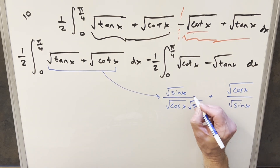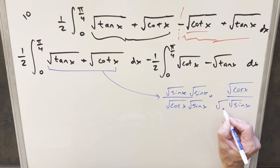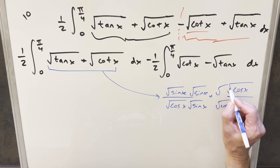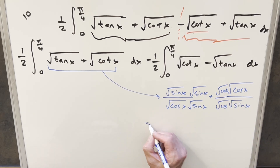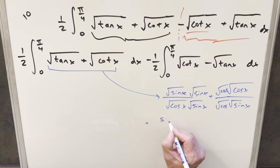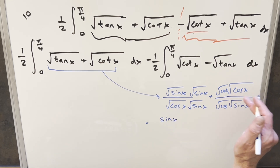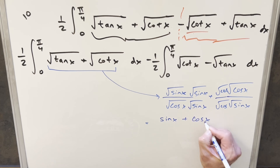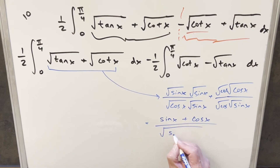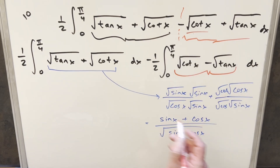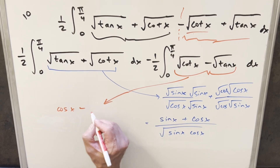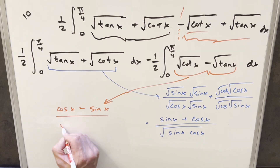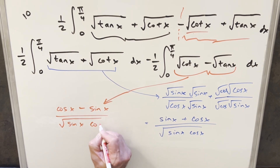To get the common denominator, I multiply the tangent term by square root of sin x over square root of sin x, and the cotangent term by square root of cos x over square root of cos x — each multiplying by one. Square root sin x times square root sin x gives sin x, and square root cos x times square root cos x gives cos x. The denominator becomes square root of (sin x · cos x). So the first integral's numerator becomes sin x + cos x, and for the second integral, going through the same steps, the numerator becomes cos x − sin x, over the same denominator, square root of (sin x · cos x).